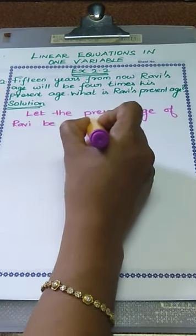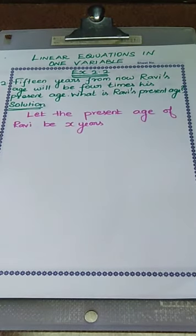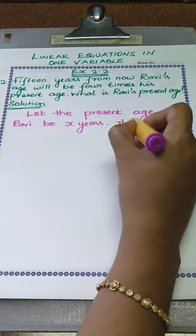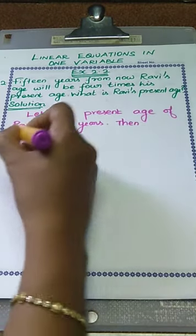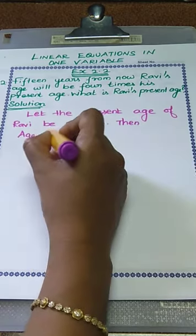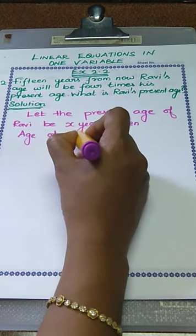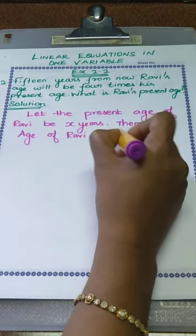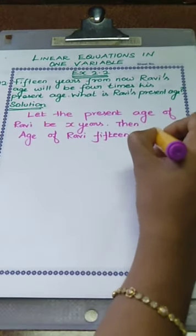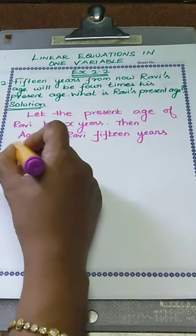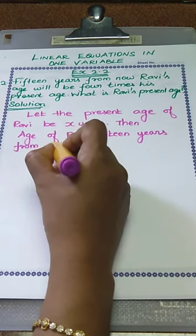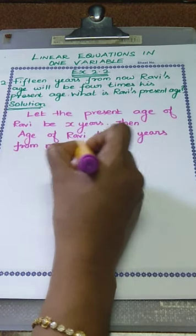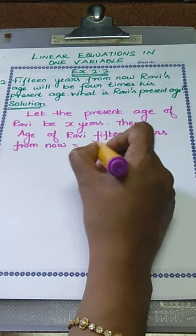Next, what is the age of Ravi 15 years from now? We have to imagine that. The age of Ravi 15 years from now is x plus 15 years.